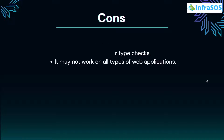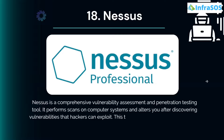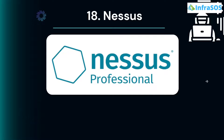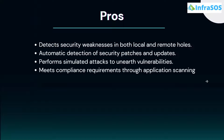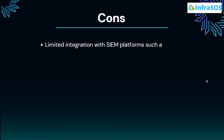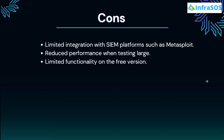At number 18 we have Nessus. Nessus is a comprehensive vulnerability assessment and penetration testing tool. It performs scans on computer systems and alerts you after discovering vulnerabilities that hackers can exploit, running more than 1,200 checks on a system to identify weaknesses. Major pros include detecting security weaknesses in both local and remote hosts, automatic detection of security patches and updates, and performing simulated attacks to unveil vulnerabilities. Cons include limited integration with SIEM platforms such as Metasploit, reduced performance when testing large networks, and limited functionality on the free version.